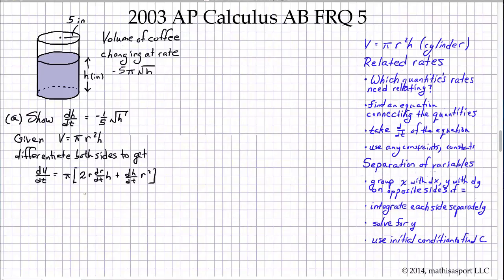dV/dt is the quantity that we're trying to solve for. dV/dt is what we've been given. dV/dt is known to be -5π times the square root of H.